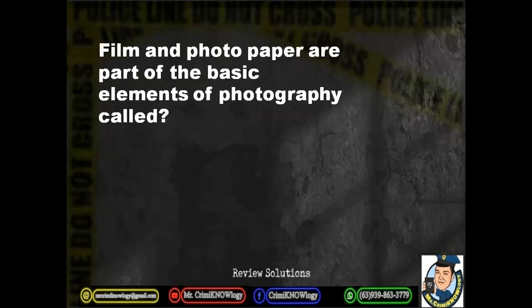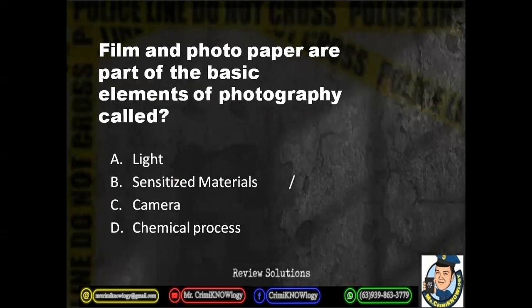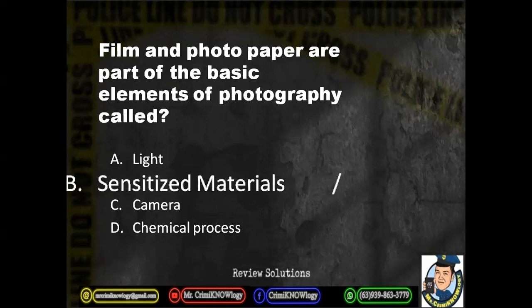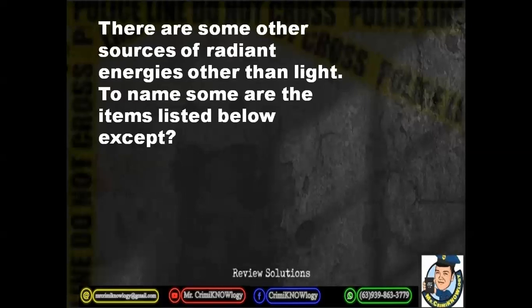Film and photo paper are part of the basic elements of photography called: A. Light. B. Sensitized materials. C. Camera. D. Chemical process. The correct answer is sensitized materials. Film and photo paper are the sensitized materials. Light is the medium for exposure, camera is the equipment — the light-tight box, and chemical process is for development.